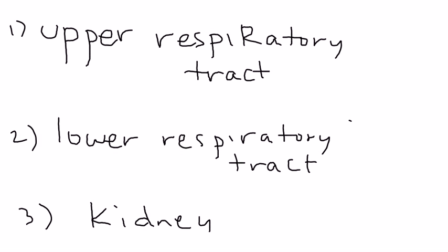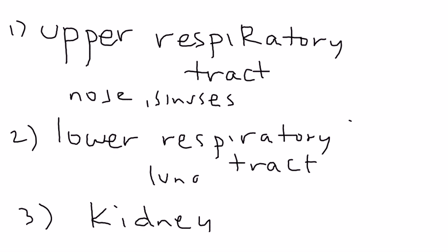When we talk about Wegener's, we focus on these three areas. Upper respiratory tract refers to the nose and sinuses, lower respiratory tract refers to the lungs, and the kidneys are the third area. Keep these in mind — if a clinical vignette involves symptoms in all three, Wegener's should be high on your differential.